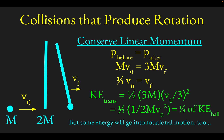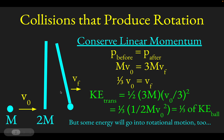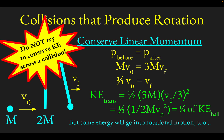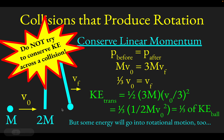Some energy is also going to end up in rotational motion. One interesting point: this conservation of linear momentum, and the system translating at one third V₀, would be true no matter where the ball hit on the stick. What will differ depending on where the ball hits is how much rotation is caused. A warning: don't try to conserve kinetic energy across the collision — in general there will be noise, sound, and heat, so kinetic energy is not conserved.